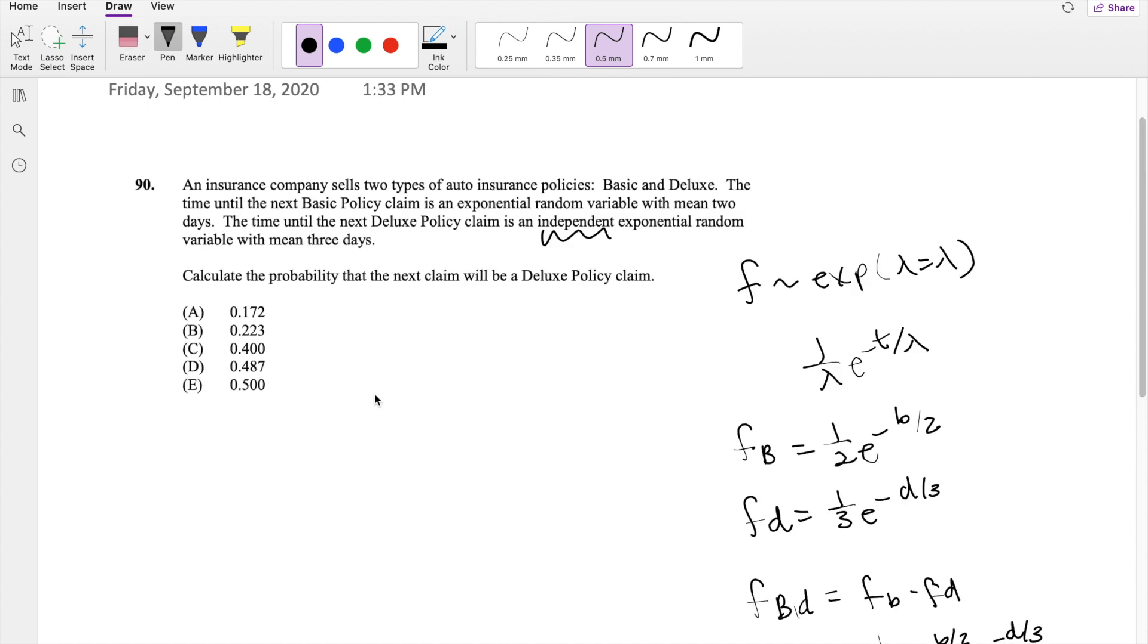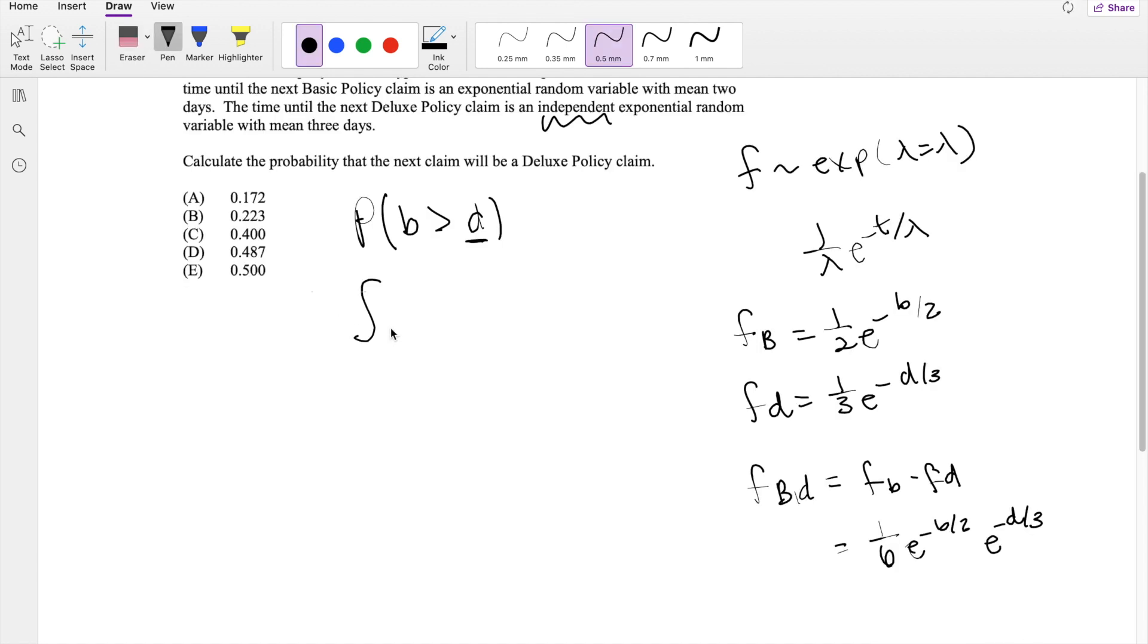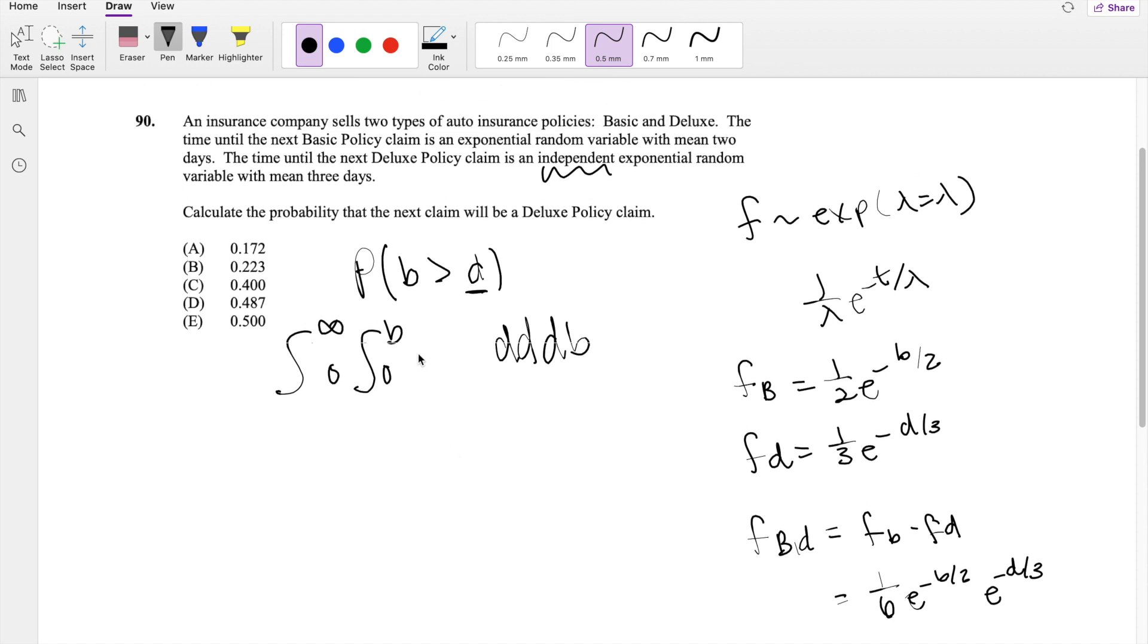So if they ask us to find the probability that the next claim will be a deluxe policy claim, we're actually looking at the probability that b is greater than d because if we want the next policy to be deluxe, then the waiting time for basic should be greater and the waiting time for deluxe should be smaller. So this is equal to, going from b, it has to be greater than d, so this is bounded by b if we integrate with respect to d first. And b is just going from 0 to infinity, the normal for exponential functions of the distribution function of b and d.